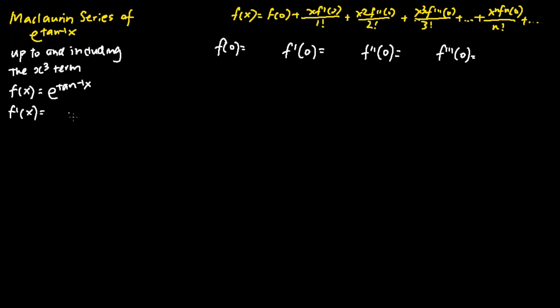We differentiate tangent inverse x and get 1 over 1 plus x squared, multiplied by e to the power of tangent inverse x.